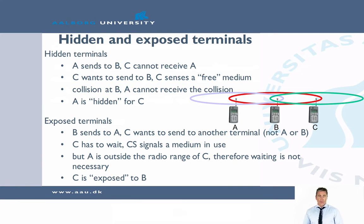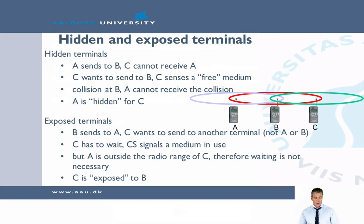Let's look at some of the problems in wireless systems. There are two classical problems: the hidden terminal problem and the exposed terminal problem. Looking at the figure, assume that A sends to B and that C cannot receive A. Because C cannot hear what is going on and wants to send to B, it considers the medium to be free. So it starts sending. The problem is that then we have a collision at B, and neither A nor C knows what is going on.